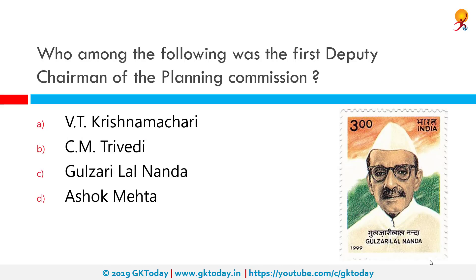Who among the following was the first deputy chairman of the Planning Commission? That would be Gulzarilal Nanda. Gulzarilal Nanda was also interim acting Prime Minister of India for two short periods, following the deaths of Jawaharlal Nehru in 1964 and Lal Bahadur Shastri in 1966. He was an Indian politician and economist who specialized in labor issues.